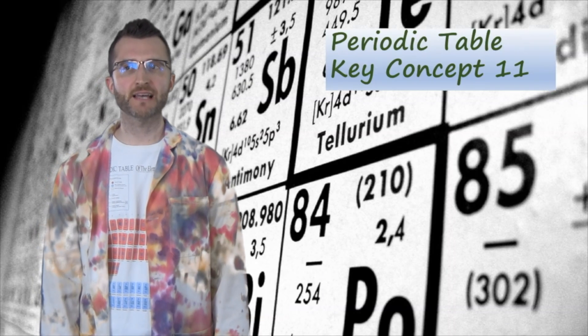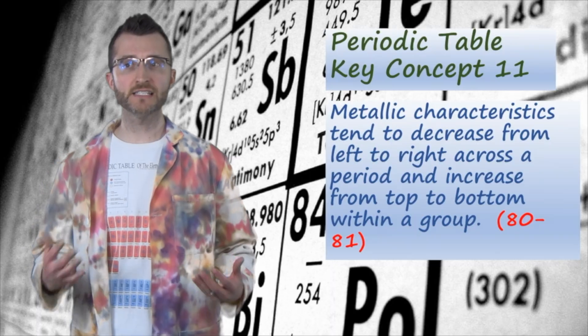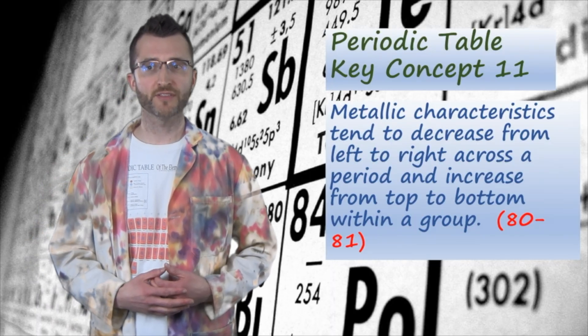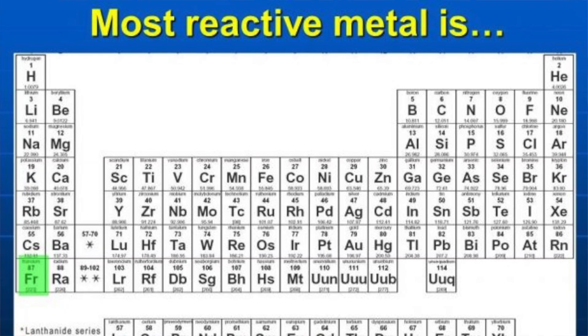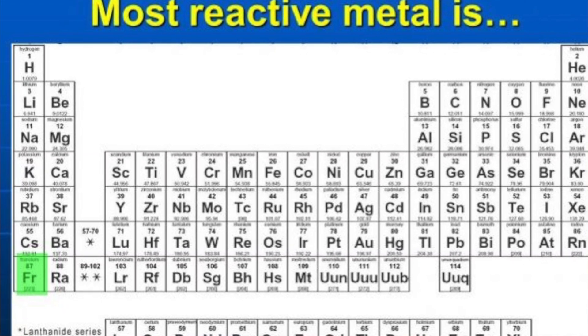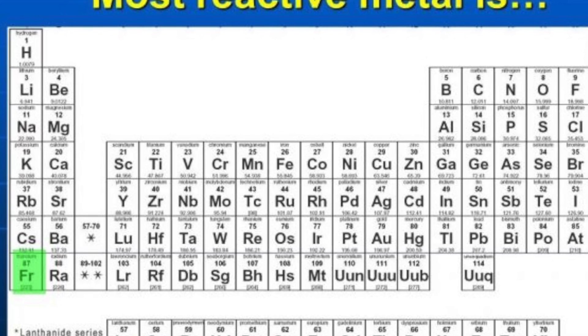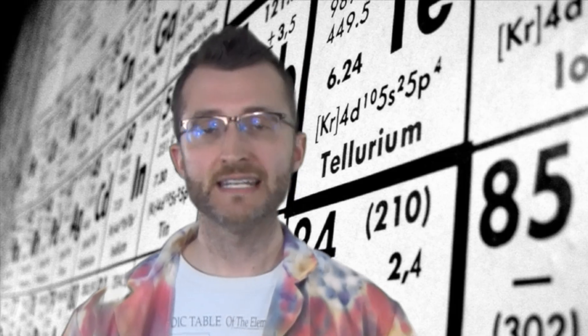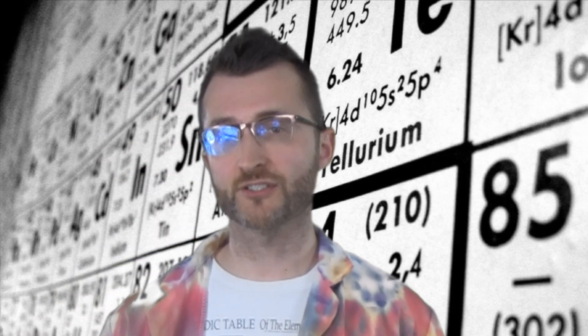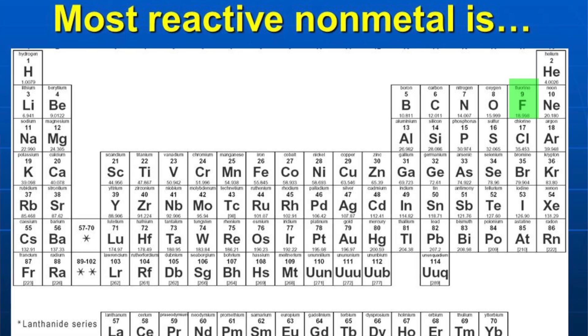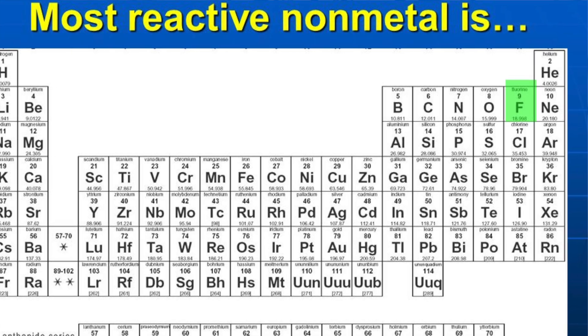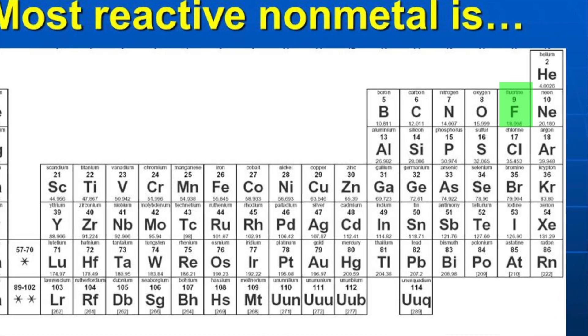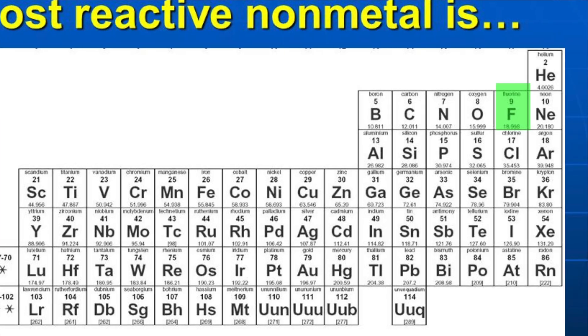Periodic Table Key Concept 11. Metallic characteristics tend to decrease from left to right across a period and increase from top to bottom within a group. Metals tend to lose electrons due to their weak attractions. The metal with the weakest attractions is found in the bottom left of the periodic table. It's francium. Now, non-metals tend to gain electrons due to their strong attractions. So the most active non-metal is found in the upper right-hand corner of the periodic table. Now, noble gases are out because they're stable. They don't gain electrons. So the most active non-metal is fluorine.